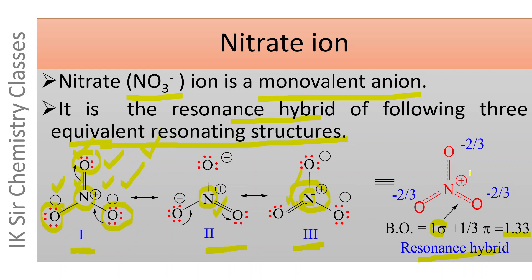In the resonance hybrid, the nitrogen atom is positively charged. At the same time, two negative charges are delocalized over three positions, so at each oxygen atom the negative charge is minus two-thirds. Since all three nitrogen-oxygen bonds have the same bond order of 1.33, they have the same bond length of 124 picometers.